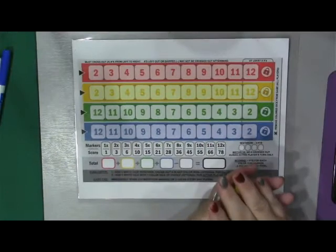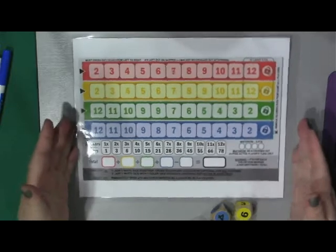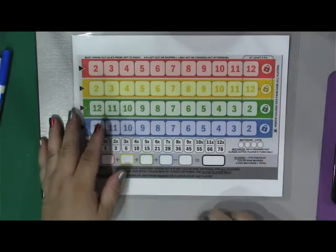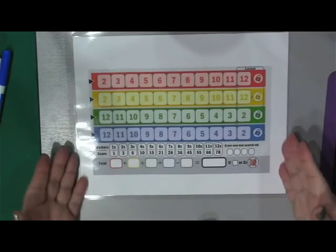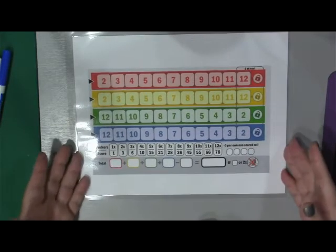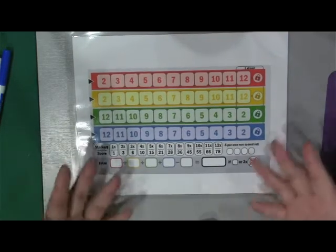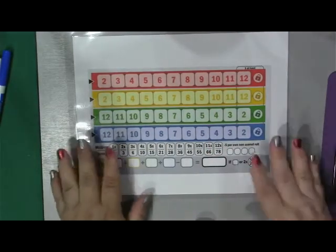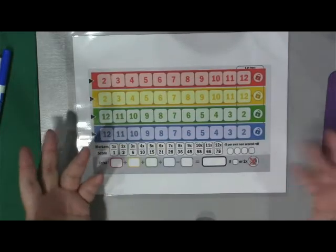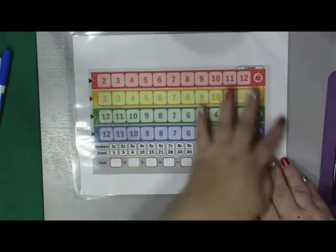We have here is called Qwixx, Q-W-I-X-X, and I have a version of the score sheet and the dice that come with it. This is actually more closely to what you would get in a score sheet of the game. This has been blown up quite a bit because I do the remote play, and if I want to show it on the stream, I want it bigger. You can find these score sheets at boardgamegeek.com.